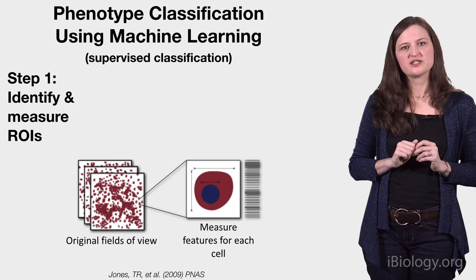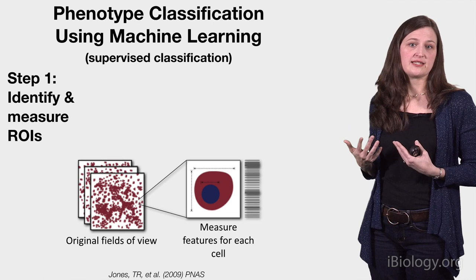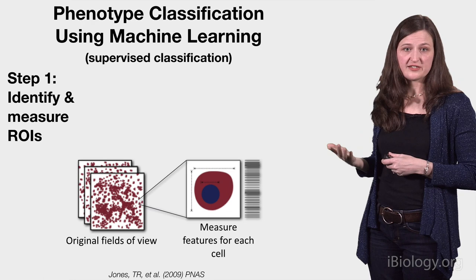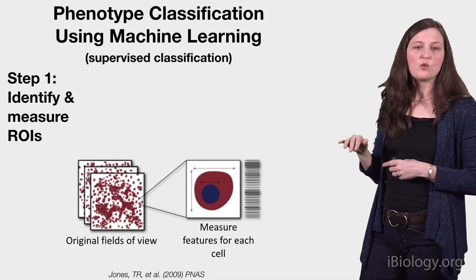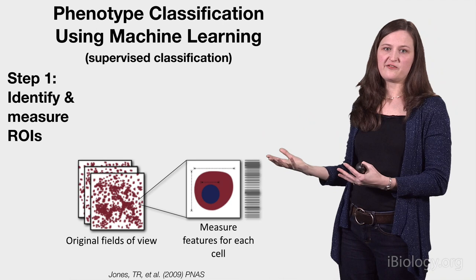But sometimes a single measured feature isn't sufficient to identify your cells of interest. Your eyes pick up on many features at once, and so in those cases you might need to use machine learning, where it also examines many features at once. This strategy needs lots of examples to learn how to make the same decision that you would make as you look at each cell or region of interest. The first step is to identify regions of interest and measure as many features as you can — shown here schematically as a barcode representing all the numerical measurements made from each individual cell.